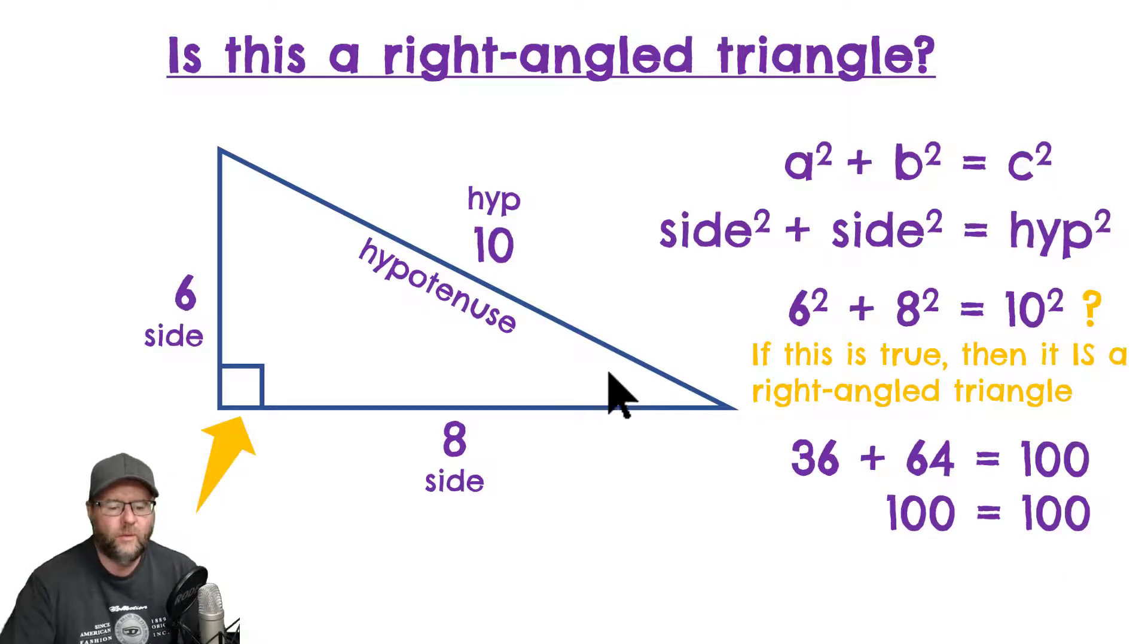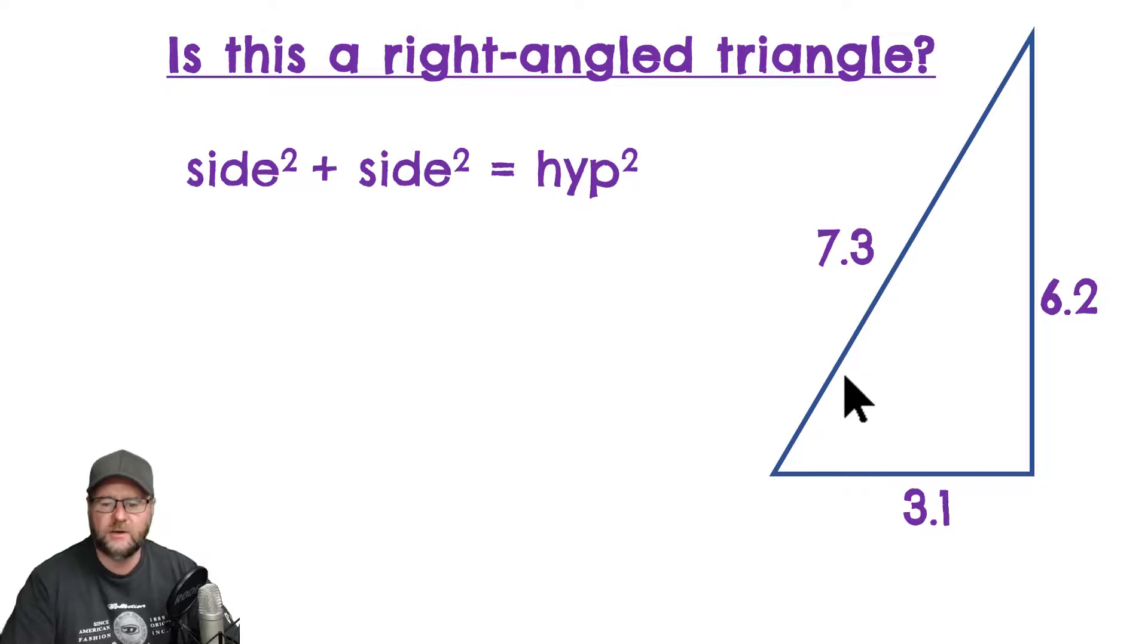So, that proof was we square the lengths of the two shorter sides, add them together, and if they equal the length of the longest side squared, mathematically, then we can assume, and we've proven, that it is a right angle triangle. Let's try one more example using the exact same ideas.